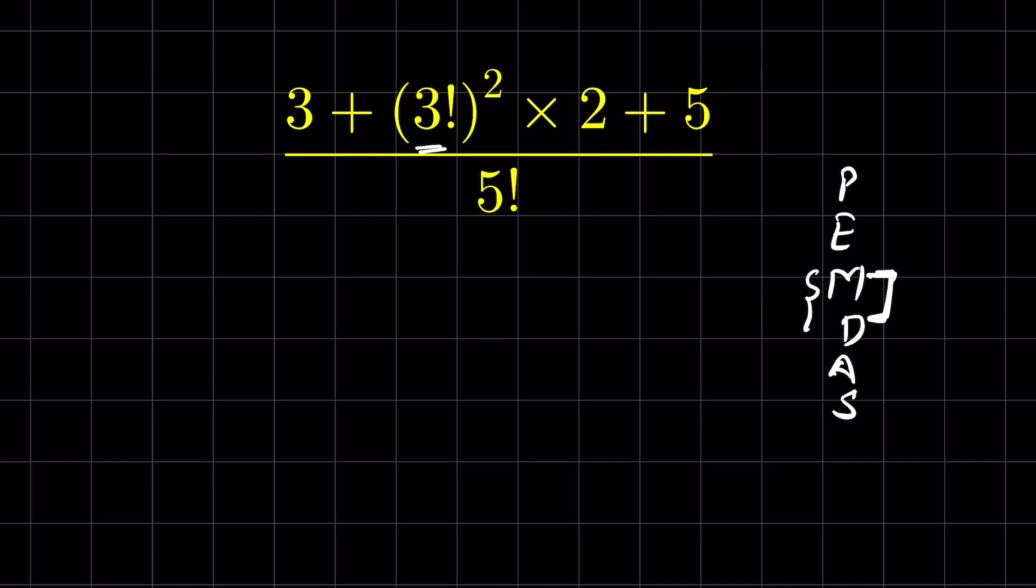Let's first solve what this 3 factorial means. Factorial means product of all the positive integers less than or equal to the given integer. So 3 factorial means 1 times 2 times 3, the product of all the positive integers till 3.